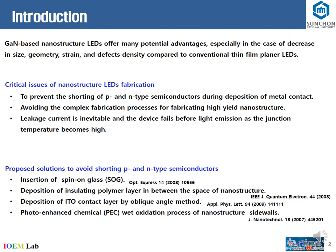In the introduction, GaN-based nanostructure LEDs offer many potential advantages compared to conventional thin-film planar LEDs. There are some critical issues of nanostructure LED fabrication which need to be solved. First, to prevent the shorting of P and N-type semiconductor during deposition of metal contact. Second, avoiding the complex fabrication process for fabricating high-yield nanostructure. There are some proposed solutions to avoid the shorting of P and N-type semiconductor during deposition of contact, which are enlisted here.